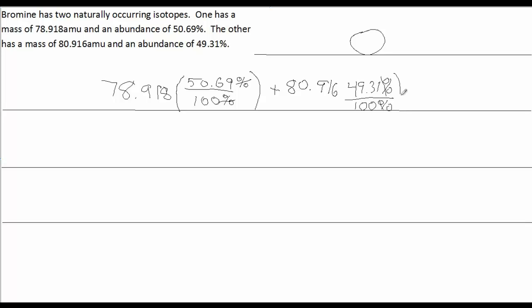You add these two numbers up, and you should come up with 79.90 AMU times 49.31% divided by 100%.